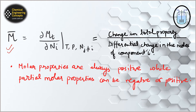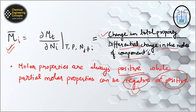Physically, it tells you the change in total property divided by the differential change in moles of component i — that is M_i bar. This is the basic definition of partial molar property. Molar properties are always positive, but partial molar properties can be negative or positive. We don't know whether volume will increase or decrease after mixing two components; the positive or negative sign depends on whether there is expansion or contraction.